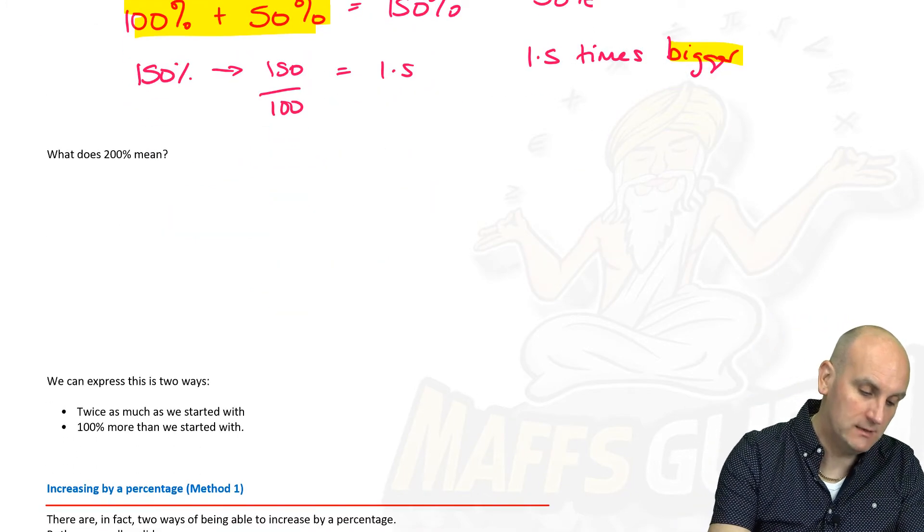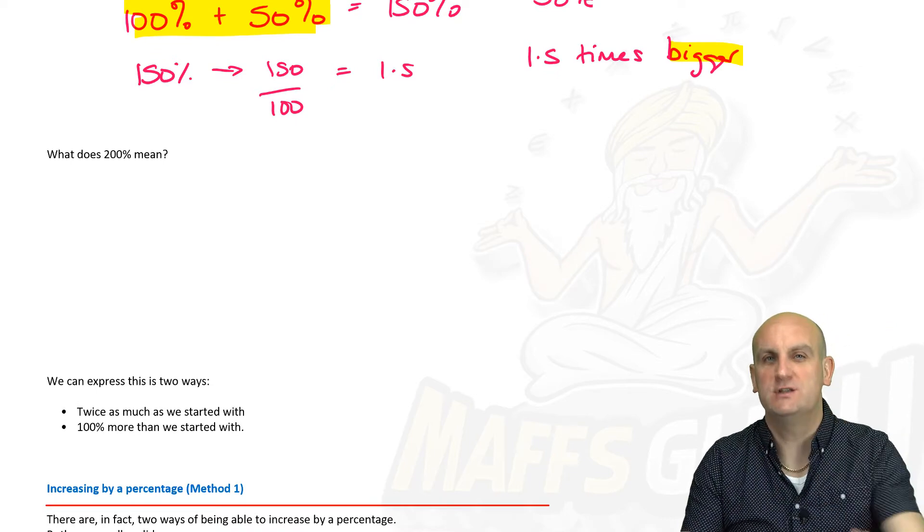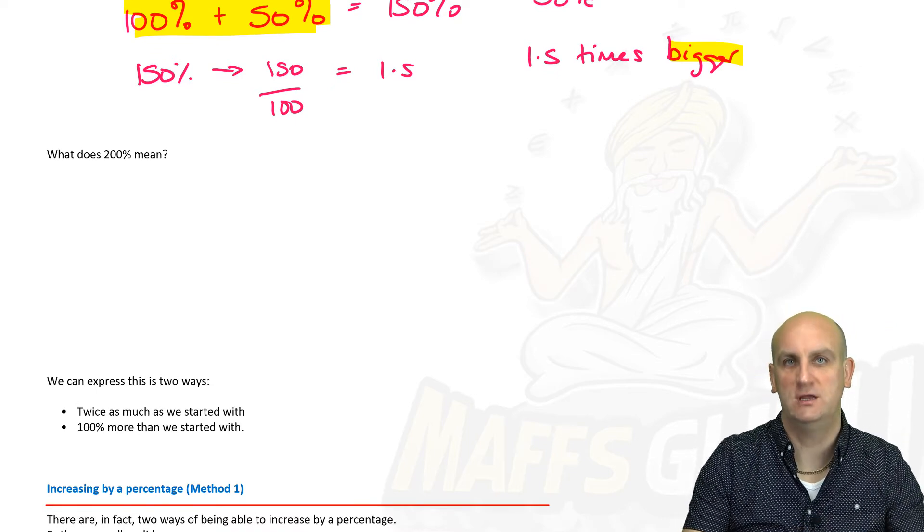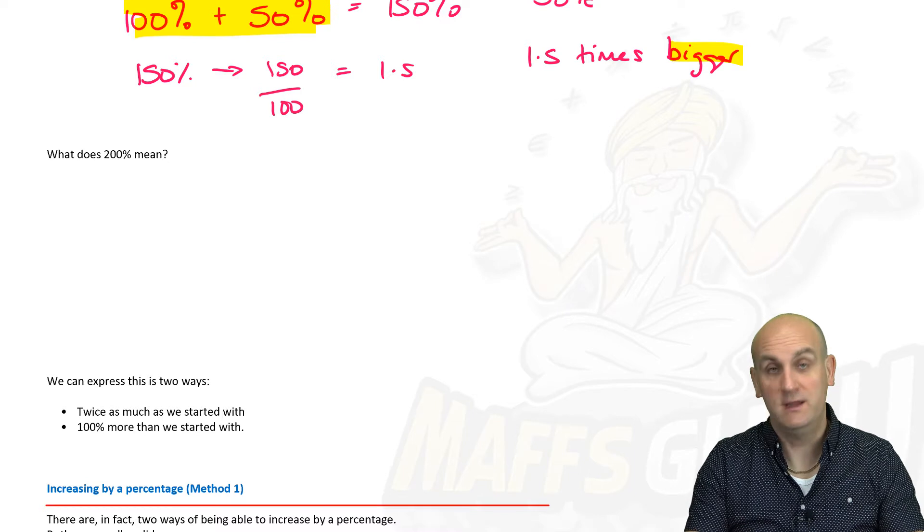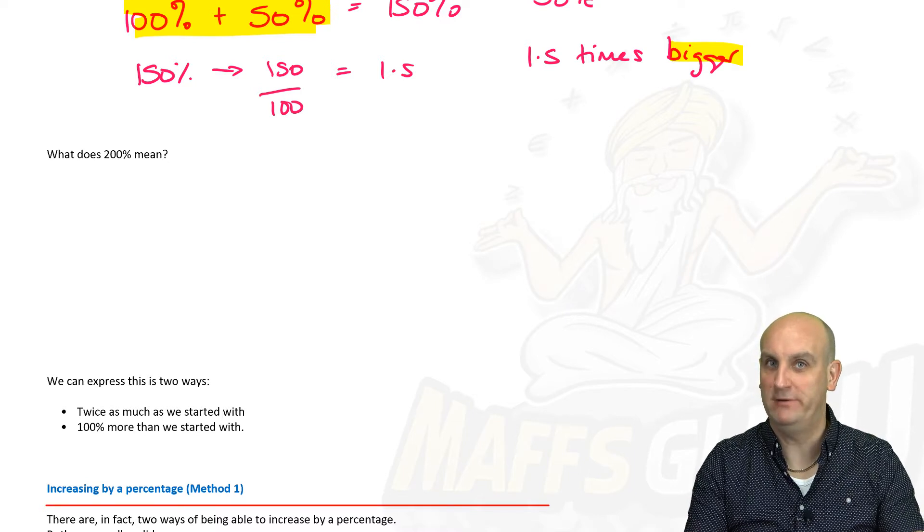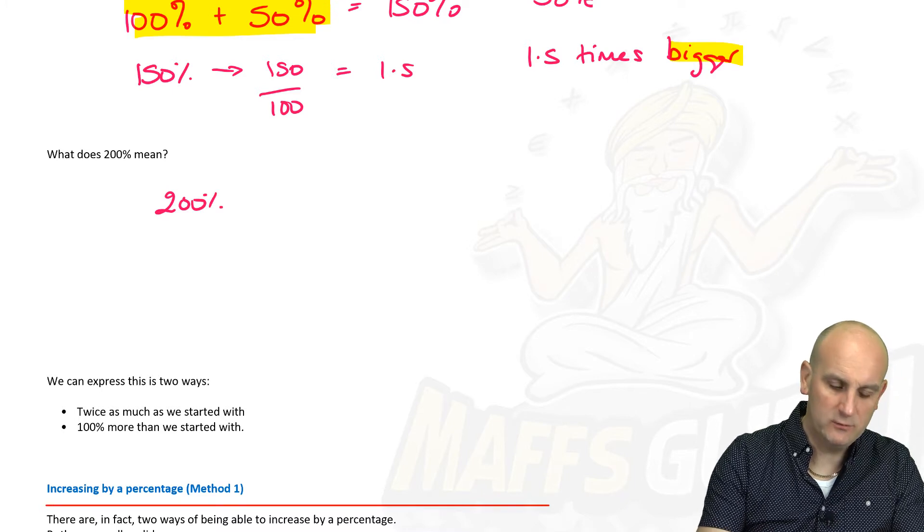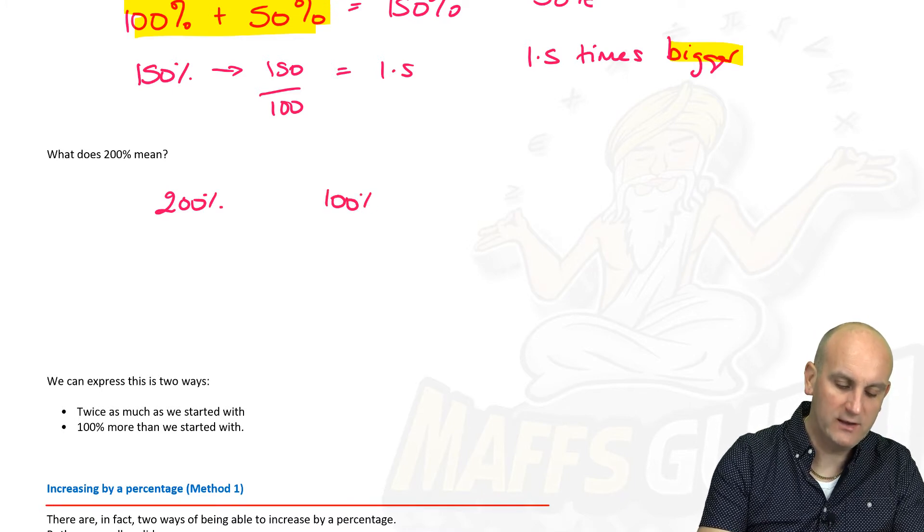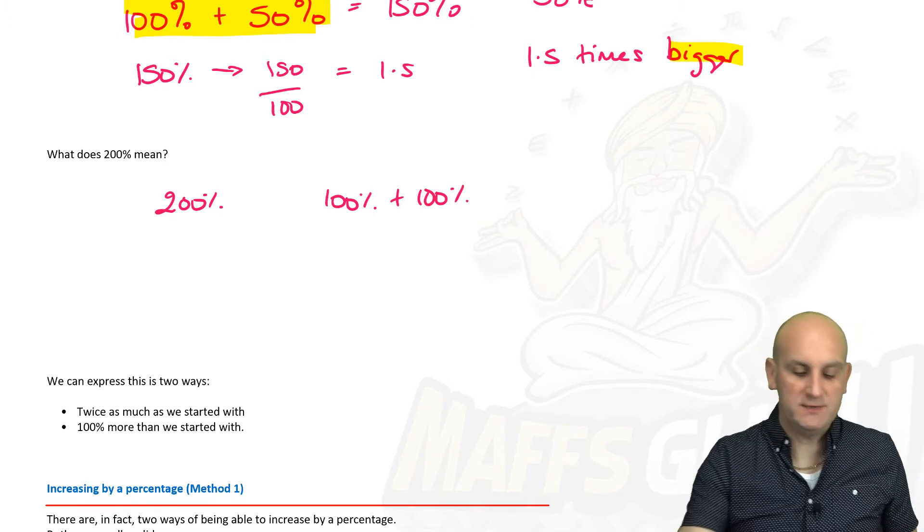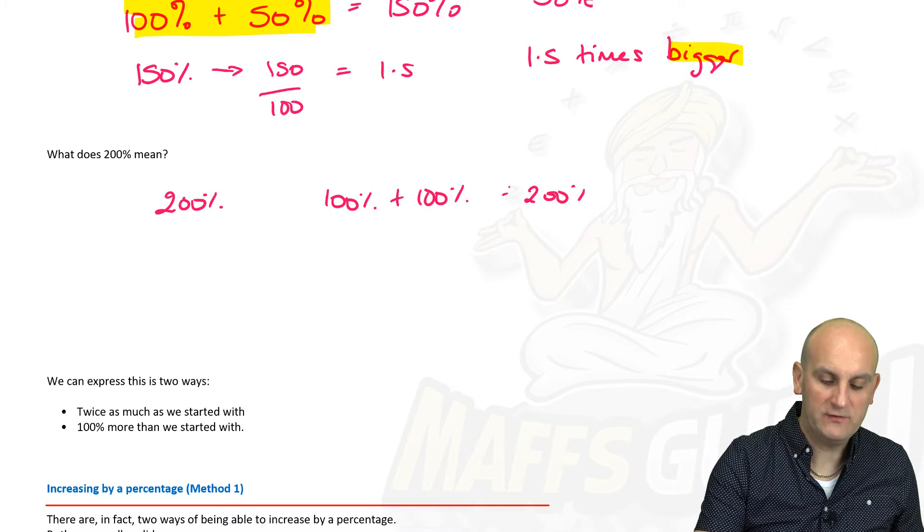What does 200% mean? And this is the language the questions are going to use to try and trick you. Because don't get Maths, there's nothing more than a big fat trick. So 200%. What do we start with normally? We normally start with 100%. How do I get to 200%? I add another 100%. So that gives me the 200%.